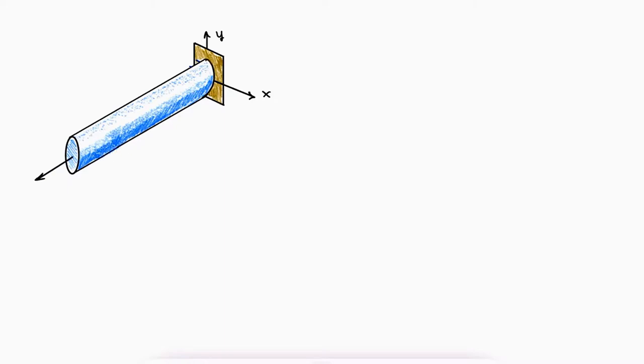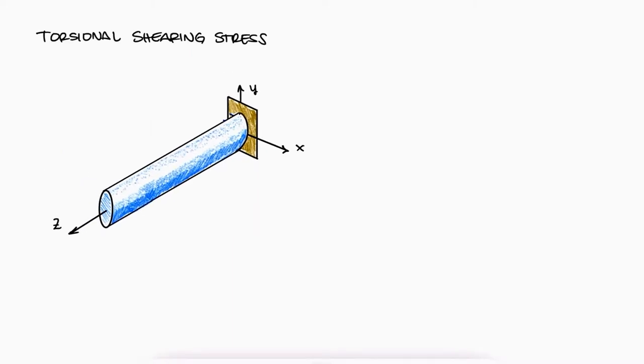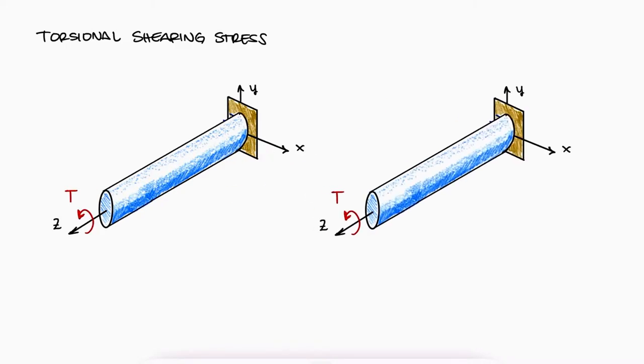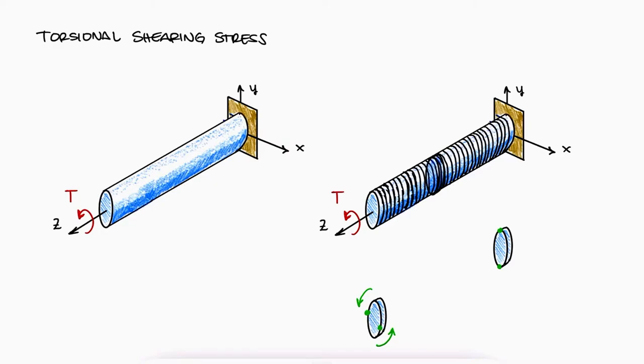We can develop an expression for the shearing stresses by looking at a rod that is fixed at one end and subjected to a torque T at the free end. If we think of this rod as the geometry that is formed when adding disks together, we would see that the disk at the wall is not rotating, the disk at the free end is the disk that has rotated the most, and the disk somewhere along the rod is rotating an amount that is somewhere in the middle.